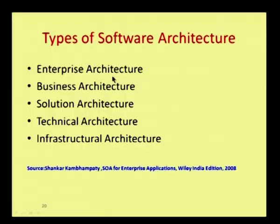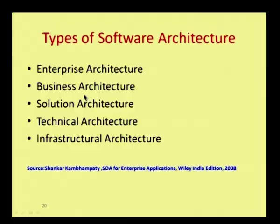The second type is business architecture. The main concern here is about profit — minimum investment and maximum profit. They want the total cost of ownership (TCO) to be minimum, and the return on investment (ROI) to be maximum. That is the main purpose of business architecture.